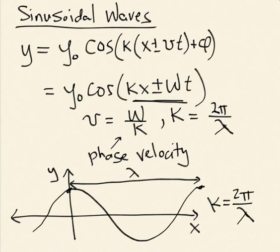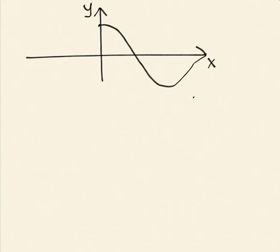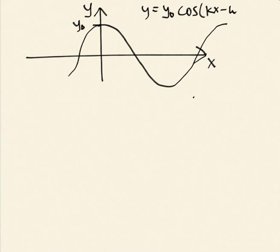And so now, if I consider what happens at other instances in time. Again, this is y versus x. Let me redraw what I had before. There's my wave at t equal to 0. And if I have y is, here's y naught. Y naught cosine. And let's imagine it's kx minus omega t.